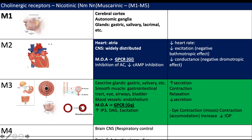M3 is located in the GIT, eye, salivary, exocrine glands, genitourinary, and respiratory system. M2 receptors work by a G protein-coupled receptor inhibitory mechanism — Gi. So activation of the muscarinic M2 receptor leads to decreased heart rate, since it is inhibitory. The SA node and AV node will have decreased firing rate, decreased heart rate, decreased excitation, and decreased conductance.